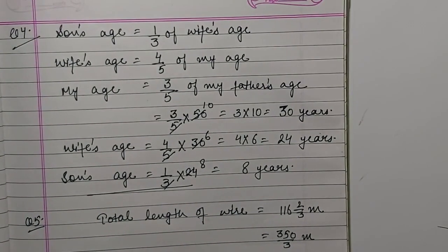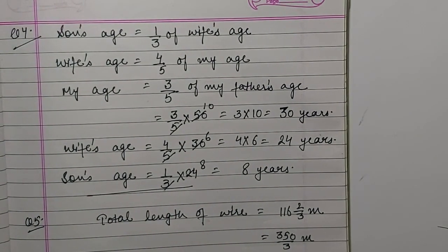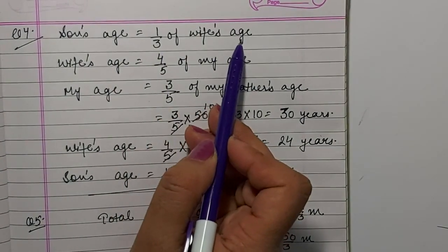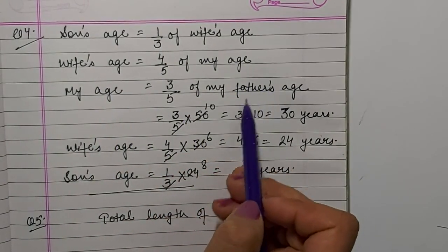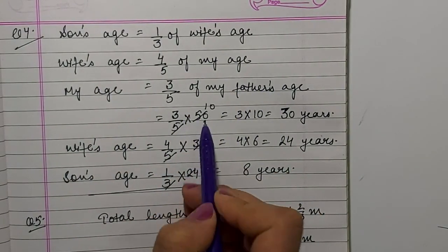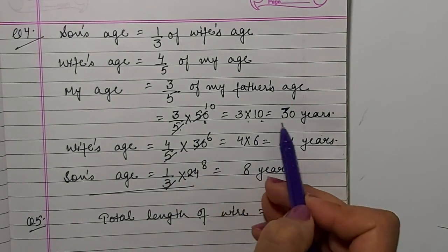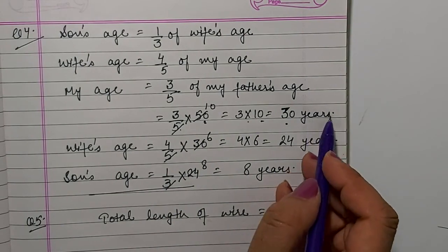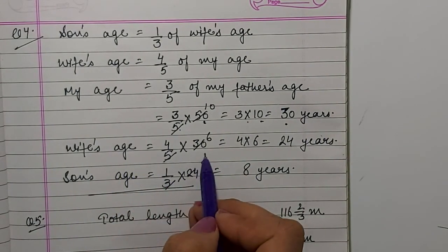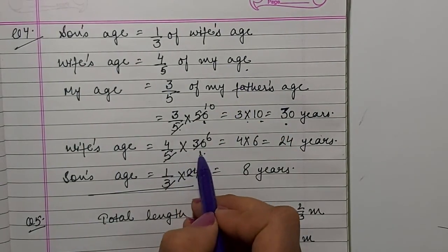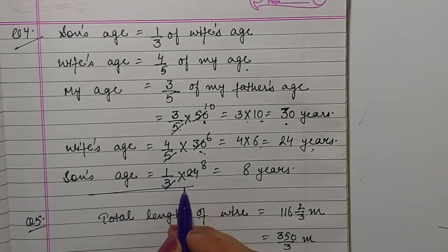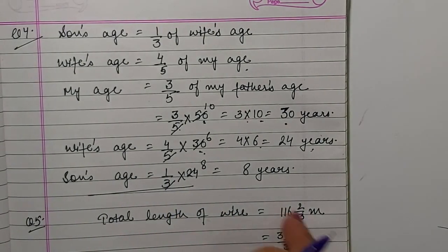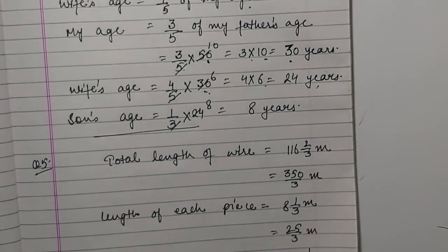Question 4: My son's age is one third of my wife's age. My wife's age is 4 by 5 of my age. My age is 3 by 5 of my father's age. My father's age is 50 years. My age = 3 by 5 into 50 = 30 years. Wife's age = 4 by 5 into 30 = 24 years. Son's age = 1 by 3 into 24 = 8 years. Son's age is 8 years.